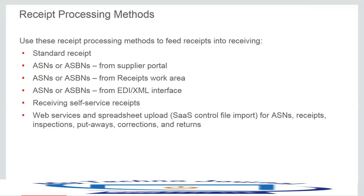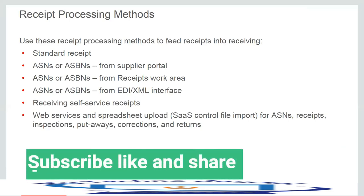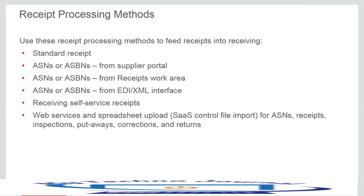The next method is ASNs and ASBNs — Advanced Shipment Notices. Suppliers can create ASNs and ASBNs through the supplier portal, and we can also allow the warehouse manager to manually load them through the Receipts work area or through the EDI or XML interface. We can also provide employees with the ability to receive expense purchase items using the self-service receiving mode, and we can make use of web services and spreadsheet upload for ASNs, receipts, inspections, put aways, corrections, and returns.